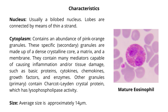The cytoplasm contains an abundance of pink-orange granules. These specific or secondary granules are made up of a dense crystalline core, a matrix, and a membrane. They contain many mediators capable of causing inflammation and/or tissue damage, such as basic proteins, cytokines, chemokines, growth factors, and enzymes.